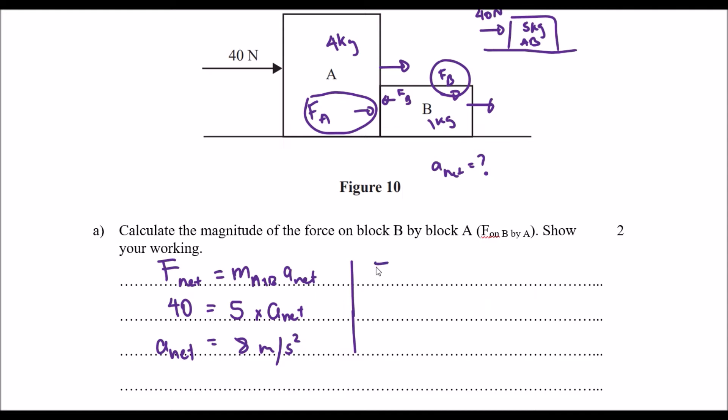So what we can say is the force on B by A is again F equals MA kind of scenario. M being the mass of B, multiplied by the net acceleration. So 1 times 8,